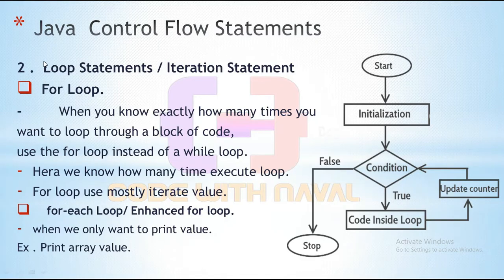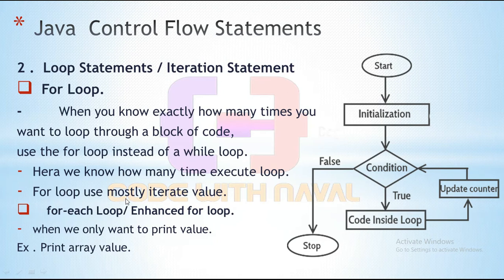Then we have a for loop. When we know exactly how many times we want to loop through a block of code, we use a for loop instead of a while loop. If we know exactly how many times we have to iterate, then use a for loop. Looking at the flow chart: we start execution, initialize the variable, write a condition for true or false, declare a counter, execute the statement, then update the counter with increment.